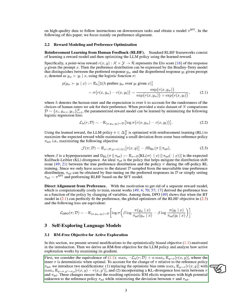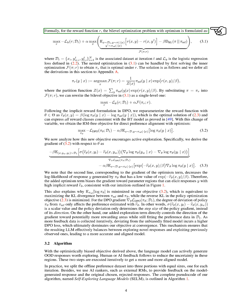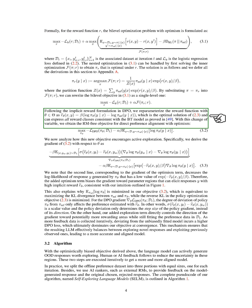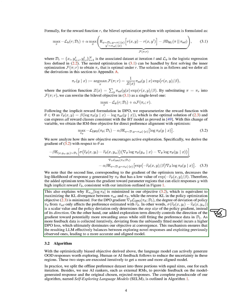The RM-free objective for active exploration introduces modifications to the optimistically biased objective. By incorporating a KL divergence loss term and adjusting the optimistic bias term, we aim to encourage active exploration while maintaining alignment with the reference policy. We formulate a bi-level optimization problem with optimism, where we optimize the policy under a given reward function. By reparameterizing the reward function, we obtain an RM-free objective for direct preference alignment with optimism. This new objective promotes active exploration by biasing the gradient towards regions that can elicit high-reward responses.